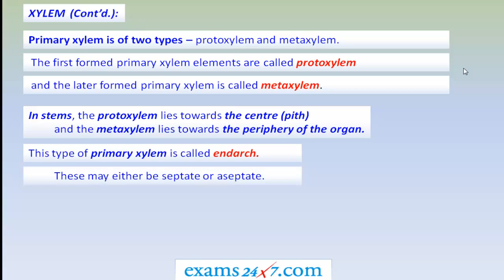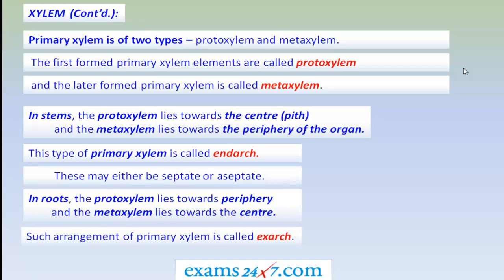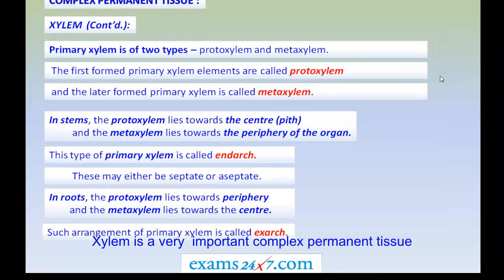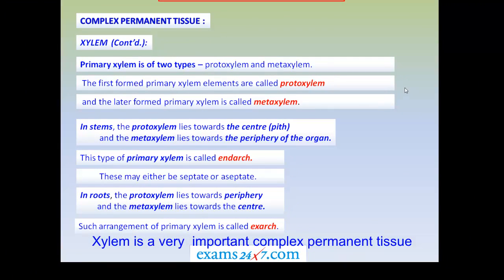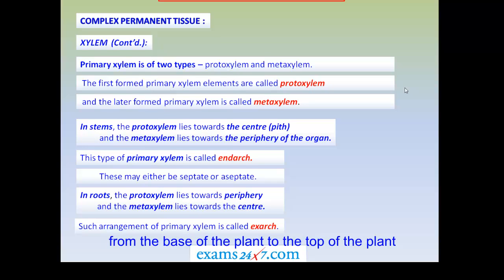In the case of roots, the protoxylem faces the periphery of the root, whereas the metaxylem lies towards the center or pith. Such an arrangement of the primary xylem is called exarch xylem. Xylem is a very important complex permanent tissue of flowering plants, responsible for transporting water along with minerals from the base of the plant to the top, building continuity in the flow of water within the plant body.